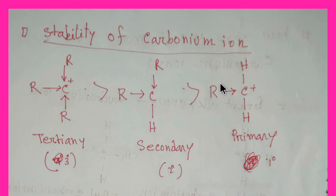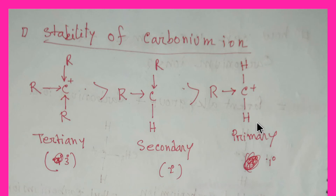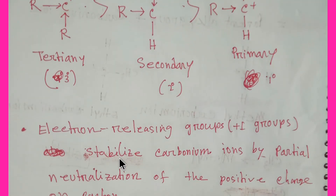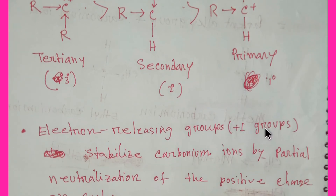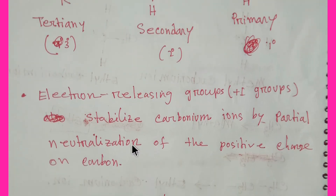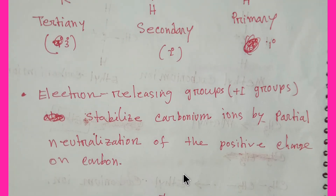This carbon is satisfied by only one alkyl group. The stabilizing power of three alkyl groups is higher than two, which is higher than one. So the stability order is: tertiary carbonium ion > secondary carbonium ion > primary carbonium ion. Alkyl groups are electron-releasing groups, that is, +I groups. Electron-releasing groups stabilize carbocations by partial neutralization of the positive charge on carbon.